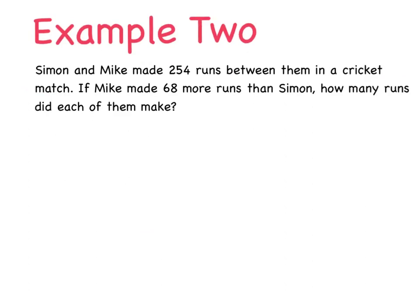This one here says, Simon and Mike make 254 runs between them in a cricket match. If Mike makes 68 more runs than Simon, how many runs did each of them make? Okay. What am I looking for here? Wait on. Simon and Mike make 254 runs between them in a cricket match. Okay. That's the total, 254. Okay. So, between the two of them, they make 254 runs. Okay. Mike makes 68 more runs than Simon. How many runs did each of them make?